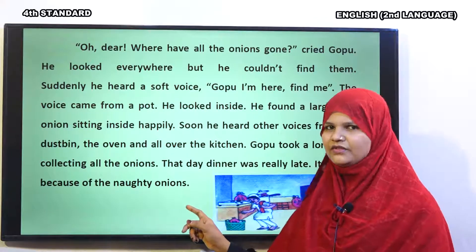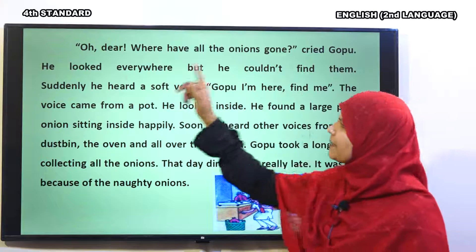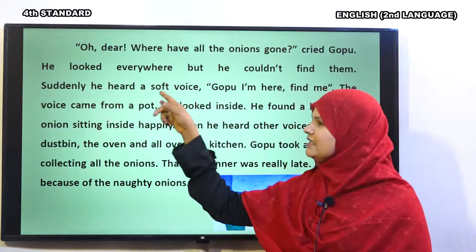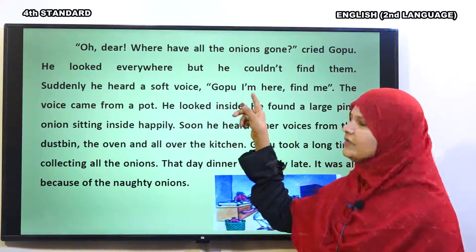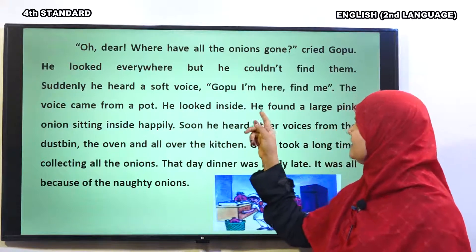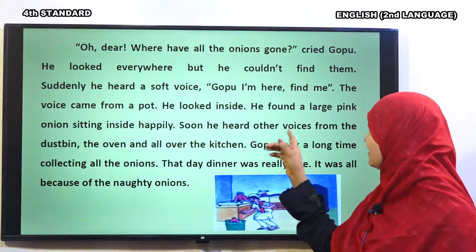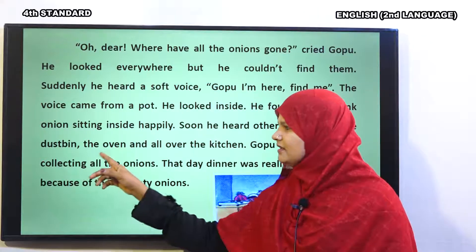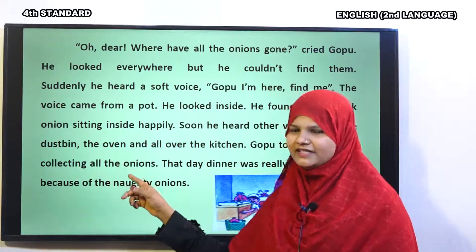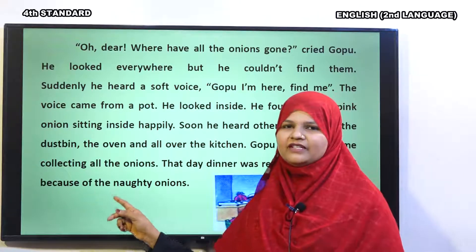Shall I read it once again? Okay. Oh dear! Where have all the onions gone? Cried Gopu. He looked everywhere, but he could not find them. Suddenly, he heard a soft voice. Gopu, I am here. Find me. The voice came from a pot. He looked inside. He found a large pink onion sitting inside happily. Soon, he heard other voices from the dustbin, the oven and all over the kitchen. Gopu took a long time collecting all the onions. That day, dinner was really late. It was all because of the naughty onions.